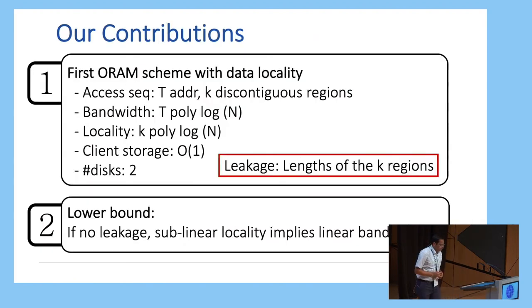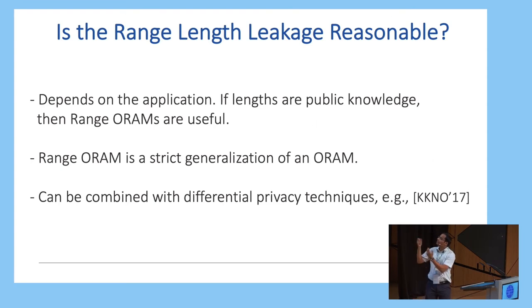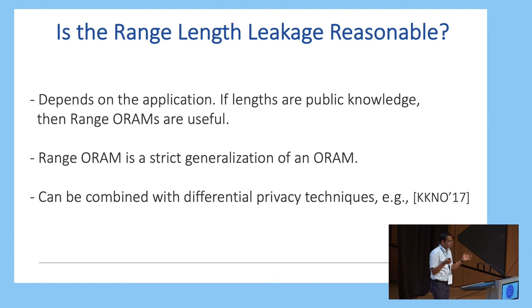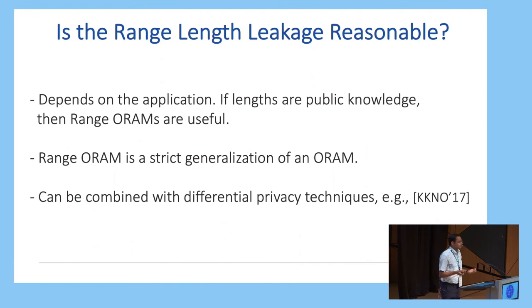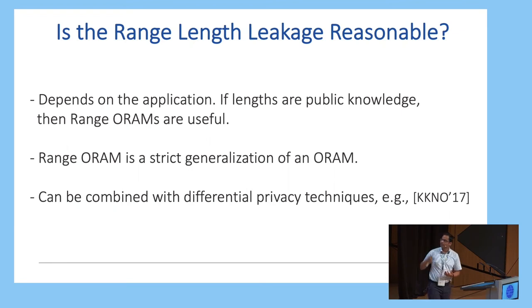To summarize, we have these upper bound and lower bound contributions. Before ending my talk, I'll quickly discuss whether such length leakage in an ORAM is reasonable. This largely depends on the application — if lengths are already public knowledge, range ORAMs are useful and give efficiency because of locality. However, range ORAM is a strict generalization of a regular ORAM: I can always turn off the locality feature by just not using predictive prefetching. Finally, recently people have considered hiding access patterns and lengths using differential privacy, and perhaps something like that can be used here to hide the length of ranges.